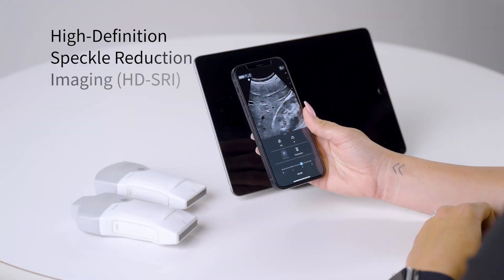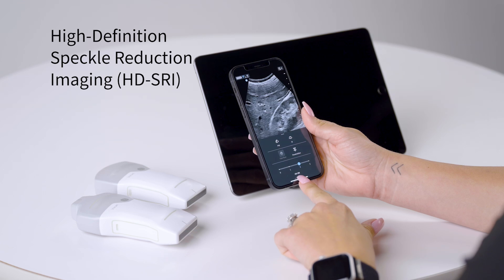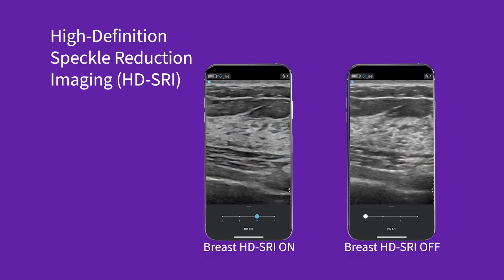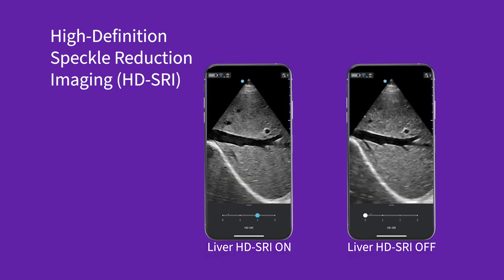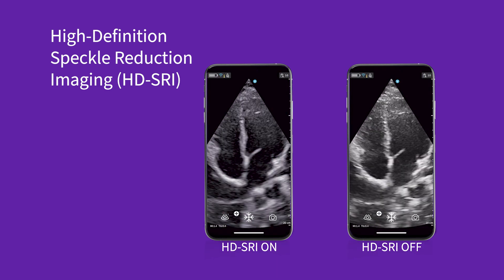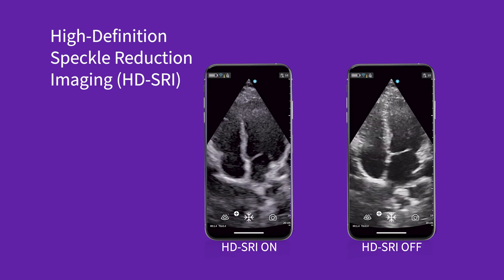Finally, for our last update on vScanAir so far this year, we are very happy to reveal that vScanAir now comes with high-def imaging. Just like our advanced ultrasound console systems, vScanAir also uses high-definition spectral reduction imaging. HD SRI gives a boost to an already outstanding image quality, delivering improved contrast resolution and a smoother appearance to enhance the details you need, all while maintaining the image's integrity.